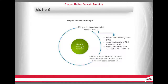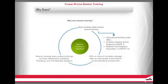Typically, 50% or more of monetary damage after an earthquake is from the failure of non-structural components. We've learned from historical earthquakes that seismic bracing helps protect buildings and their mechanical, electrical, plumbing, and fire sprinkler systems, otherwise known as MEP systems. Also, risk mitigation or insurance companies such as FM Global often drive the seismic bracing requirements.